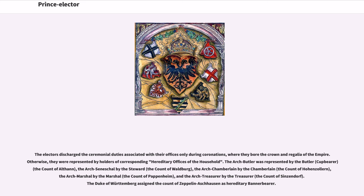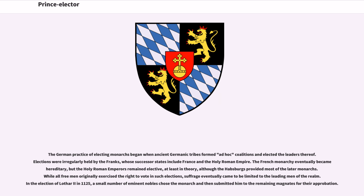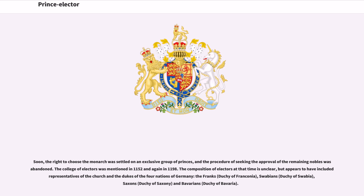The Duke of Württemberg assigned the Count of Zeppelin as cousin hereditary banner-bearer. The German practice of electing monarchs began when ancient Germanic tribes formed ad hoc coalitions and elected the leaders thereof. Elections were irregularly held by the Franks, whose successor states include France and the Holy Roman Empire. The French monarchy eventually became hereditary, but the Holy Roman emperors remained elective, at least in theory, although the Habsburgs provided most of the later monarchs. While all freemen originally exercised the right to vote in such elections, suffrage eventually came to be limited to the leading men of the realm. In the election of Lothair II in 1125, a small number of eminent nobles chose the monarch and then submitted him to the remaining magnates for their approbation. The College of Electors was mentioned in 1152 and again in 1198.